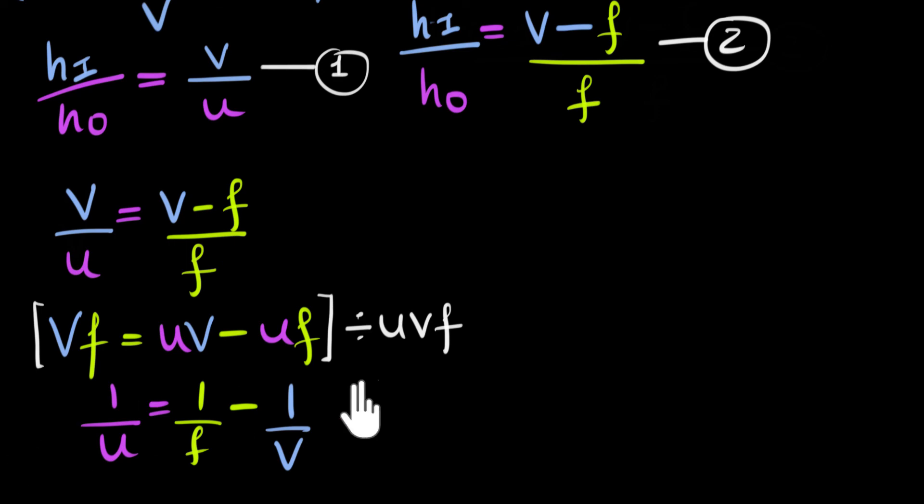And if we do one last manipulation to this equation, we'll add one over V on both sides, we'll end up with the grand equation that we're wanting. One over F equals one over F equals one over U plus one over V.